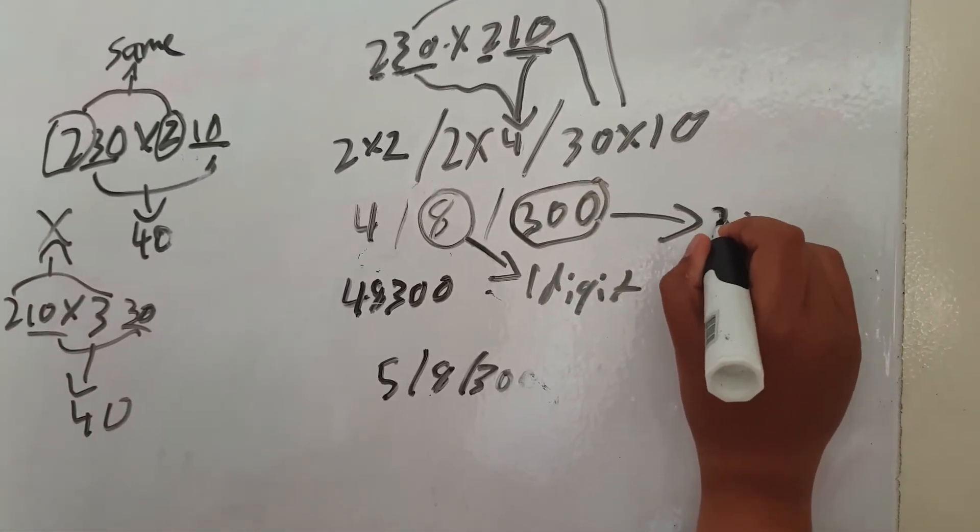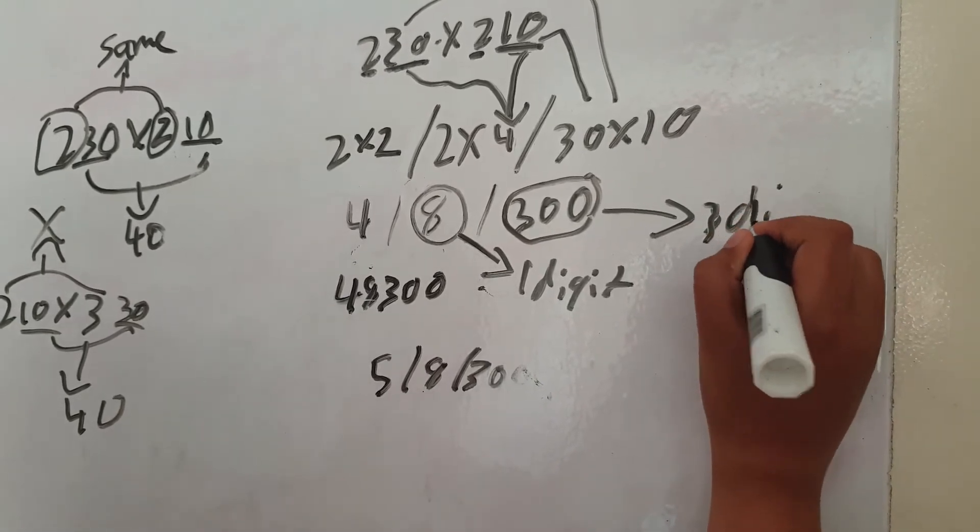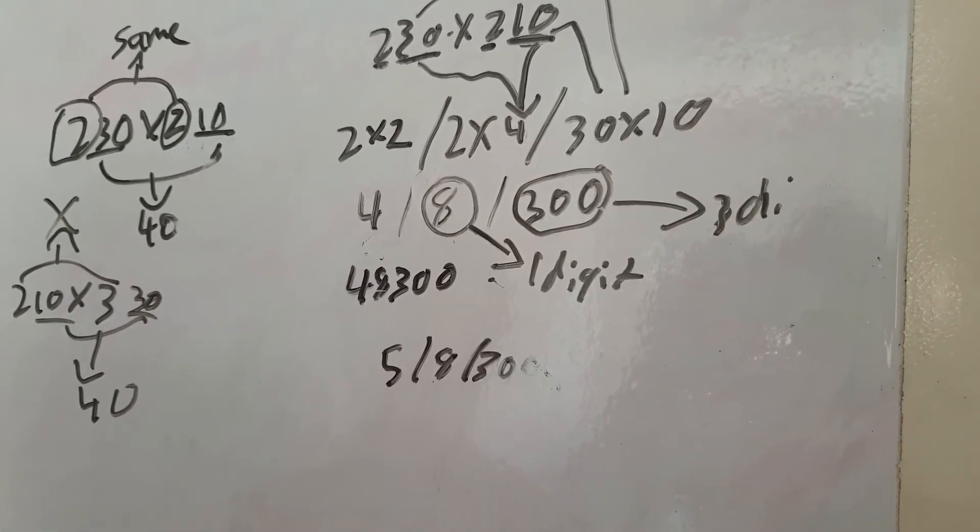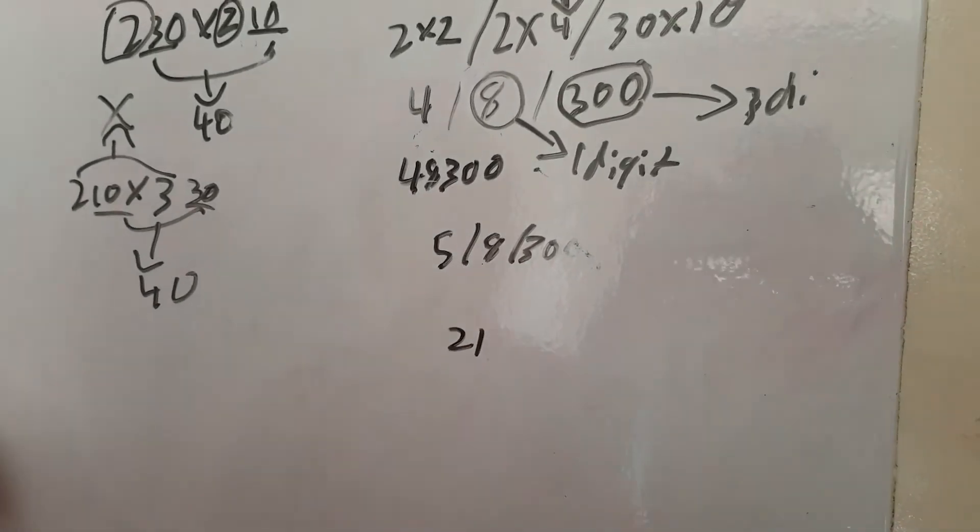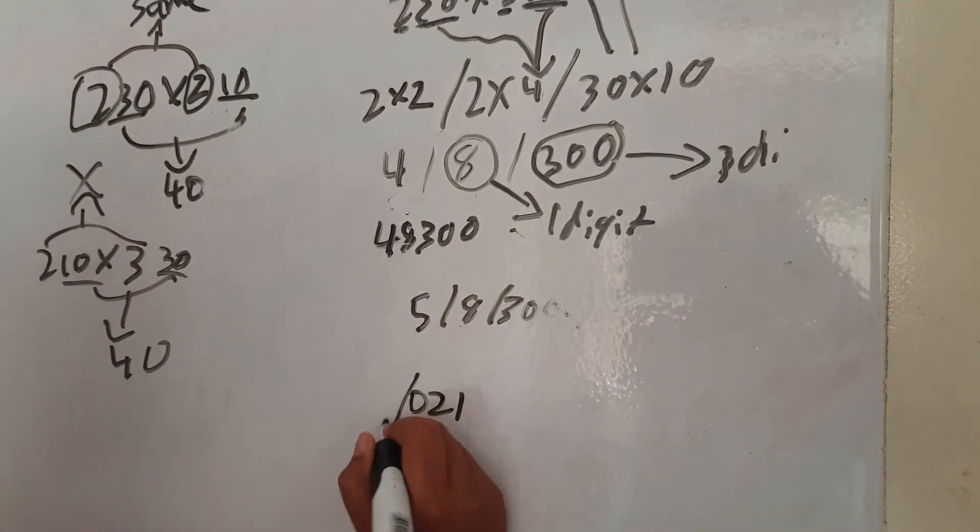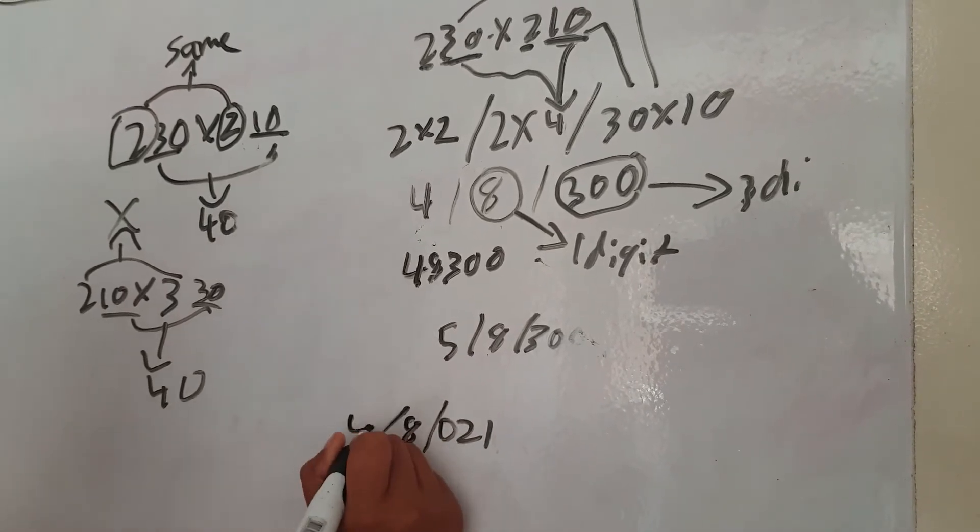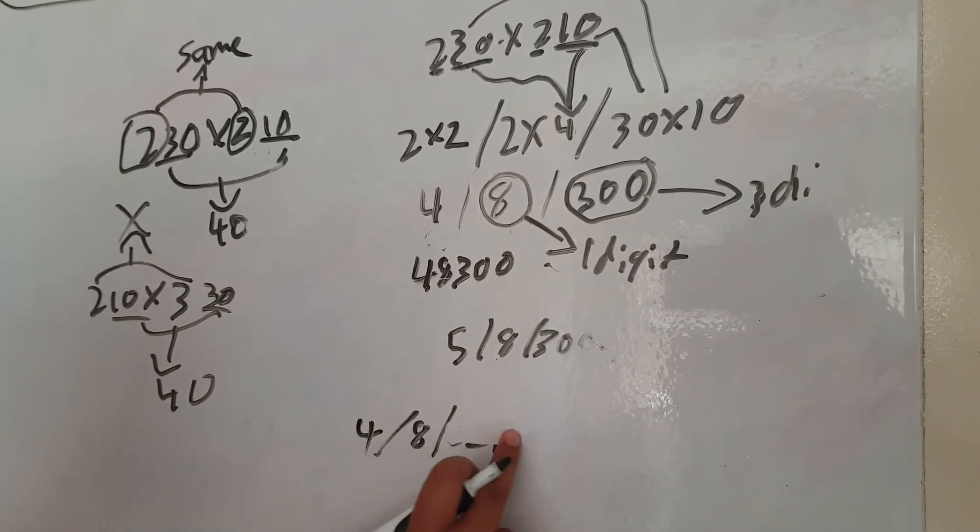This part has one digit, this part has three digits, so the last part can only have three digits. If it has less, then just put a zero at the start. For example, if you had to write 21 in there, you just put a zero in front of it, so you just put a zero if there's not enough digits.